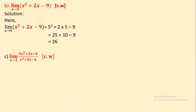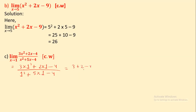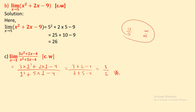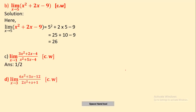Next: limit x tends to 1 of (3x² + 2x - 4) / (x² + 5x - 4). Put x = 1: numerator is 3(1) + 2(1) - 4 = 3 + 2 - 4 = 1; denominator is 1 + 5 - 4 = 2. So the answer is 1 upon 2. This is not an indeterminate form — the limiting value answer is 1/2.